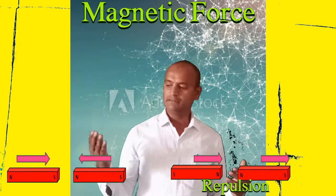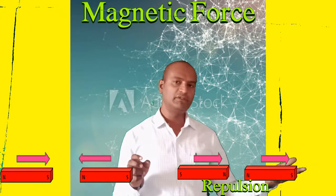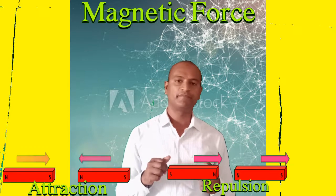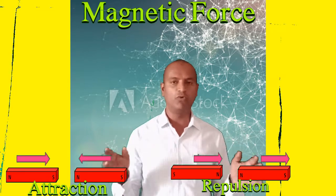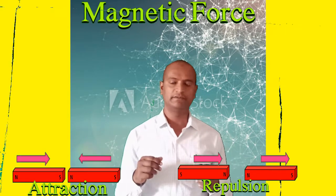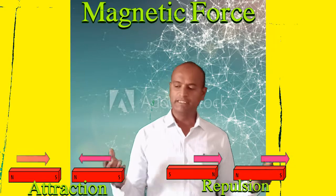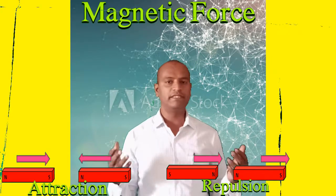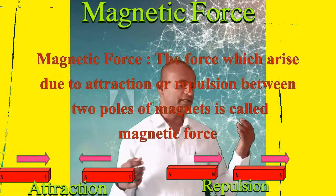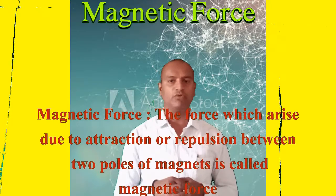Even though there is no contact between the magnets, they attract or repel, meaning there must be some force which can be exerted without contact — this is magnetic force. We define magnetic force as the force which arises due to attraction or repulsion between the poles of magnets, and this is called magnetic force.